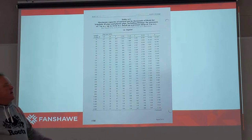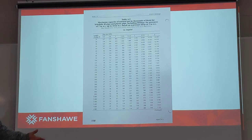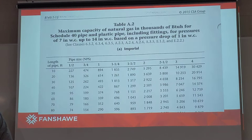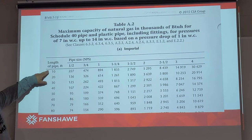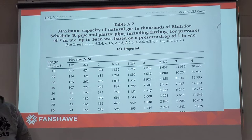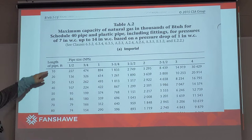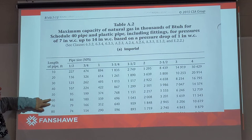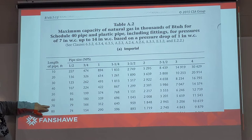The table at this point looks like this — I'm going to shrink it down so we can see the numbers we're after. The actual page number is page 118 in the B149.1-15 code book. Taking a section of Table A2, we can see the length of pipe in the left-hand column starting in 10-foot increments. Our longest measured run is 65 feet, so we're in between 60 and 70 feet. Our worst case scenario is always the longer run, which is going to be 70 feet because we're in between table values.